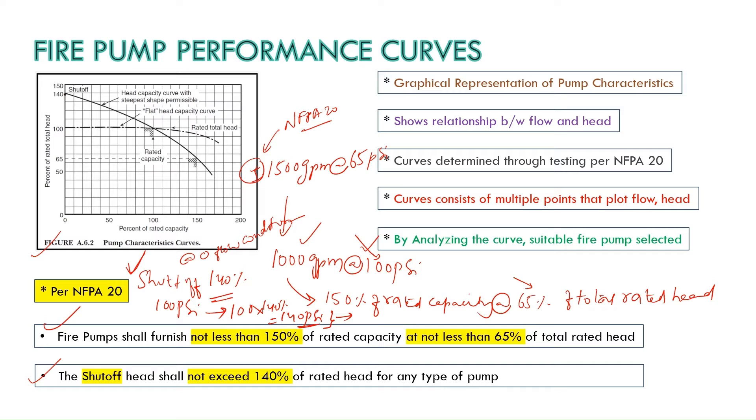So here you can see in this figure they have shown on x-axis percent of rated capacity which means flow 0 GPM 50 GPM. For example you consider they have mentioned as percentage but however you can think like 0 GPM 50 GPM 100 GPM 150 200 GPM. If you multiply this it will be 0 GPM 500 GPM 1000 GPM 1500 GPM 2000 GPM and so on. On y-axis they mentioned the PSI percent of rated head.